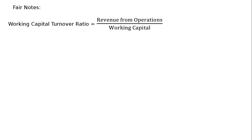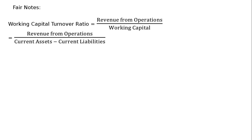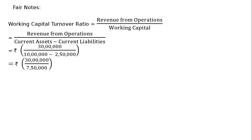In the working notes, we find working capital turnover ratio = Revenue from Operations / Working Capital = Revenue from Operations / (Current Assets − Current Liabilities) = Rs 30 lakhs / (Rs 10 lakhs − Rs 2 lakhs 50,000) = Rs 30 lakhs / Rs 7 lakhs 50,000 = 4 times. 4 times is our final answer.